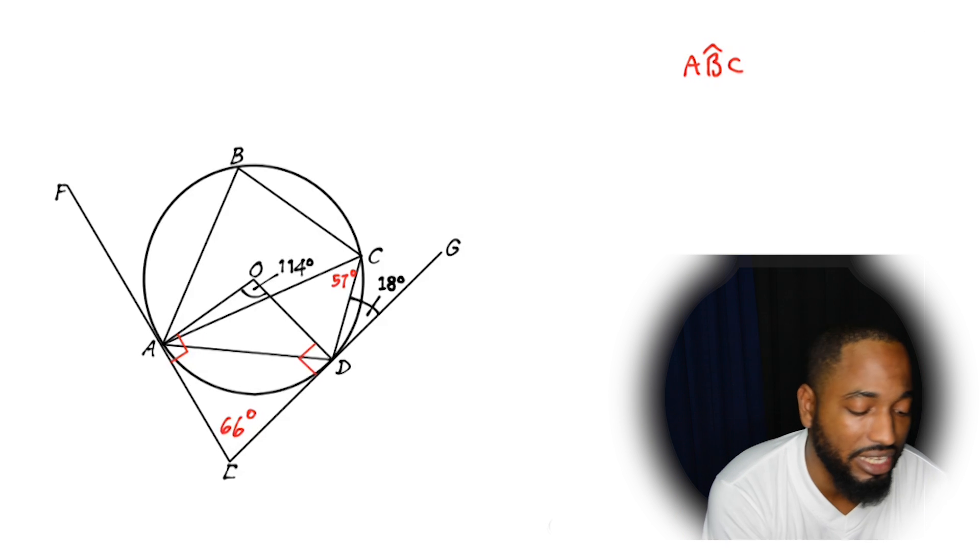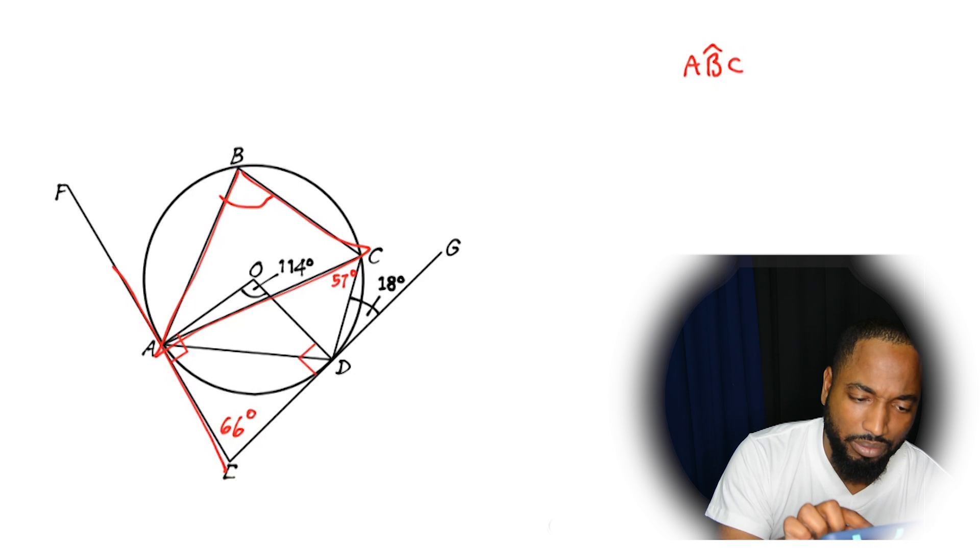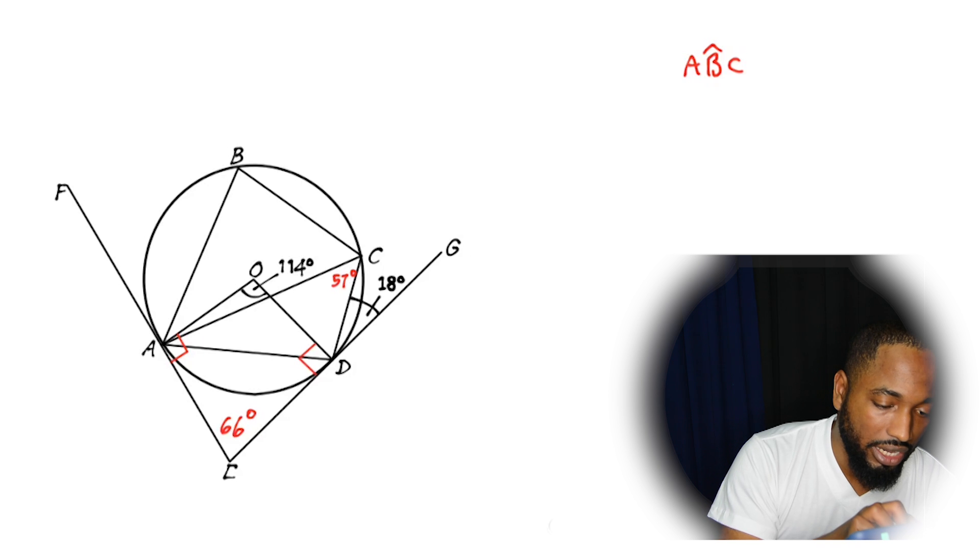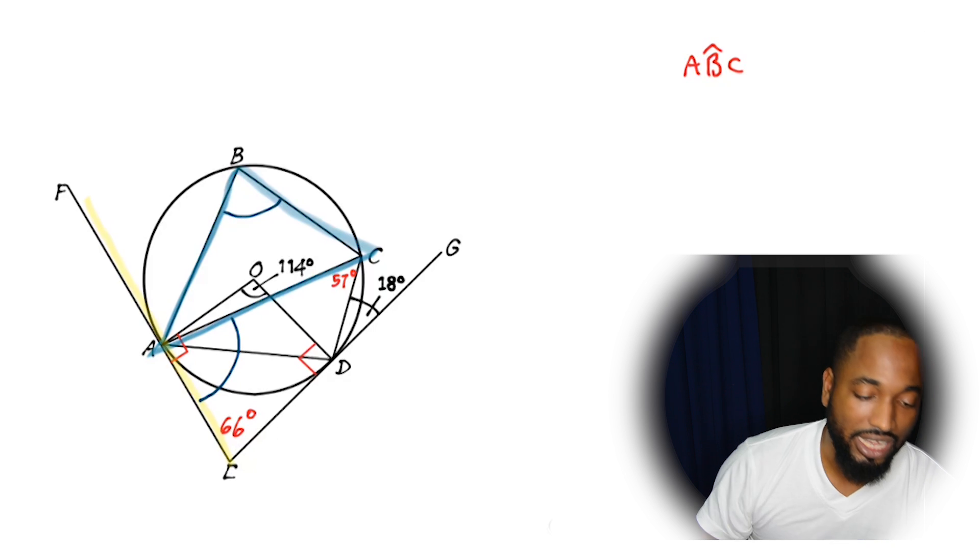So the last thing we were asked to find is angle ABC. Two marks each, four things. Eight marks. Beautiful. So angle ABC belongs to this triangle, which hits this corner. So angle ABC is part of this triangle here. And this is the triangle. And that triangle meets this tangent here. And if we know the alternate segment theorem, this angle must be equal to that angle. As simple as that. Alternate segment theorem to the rescue.